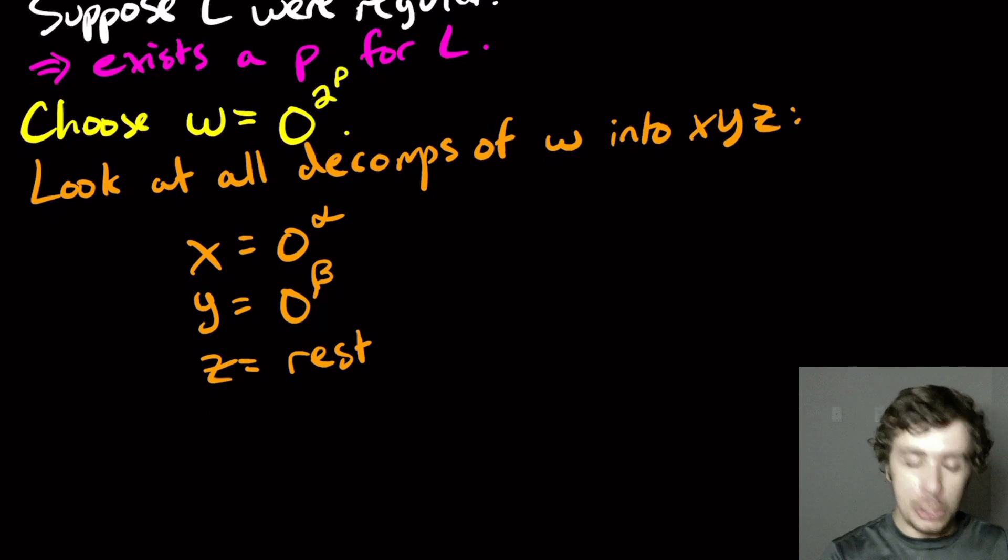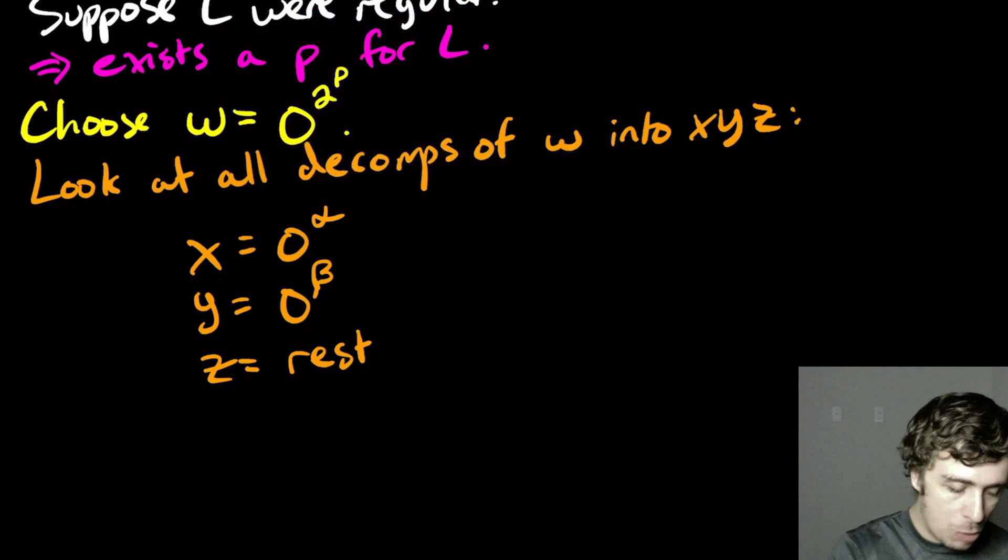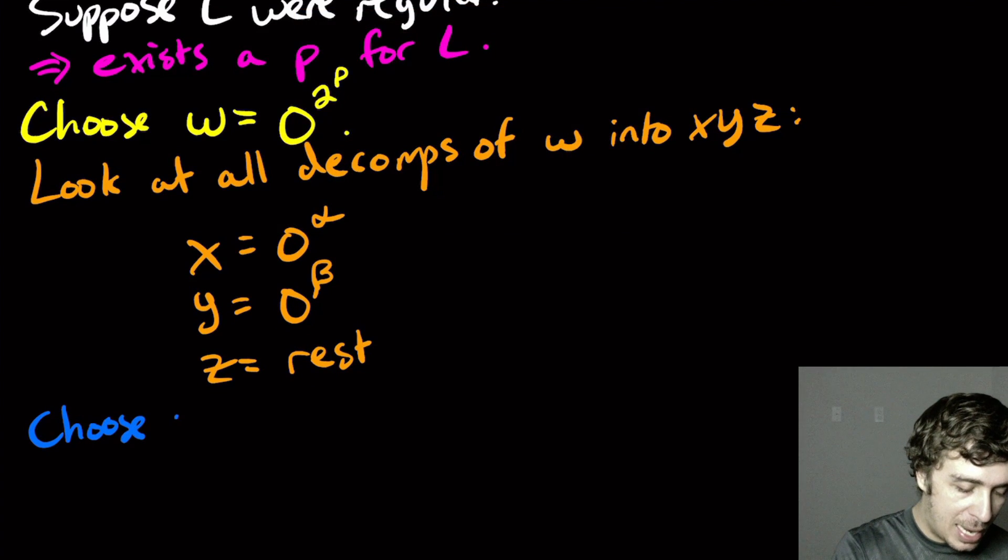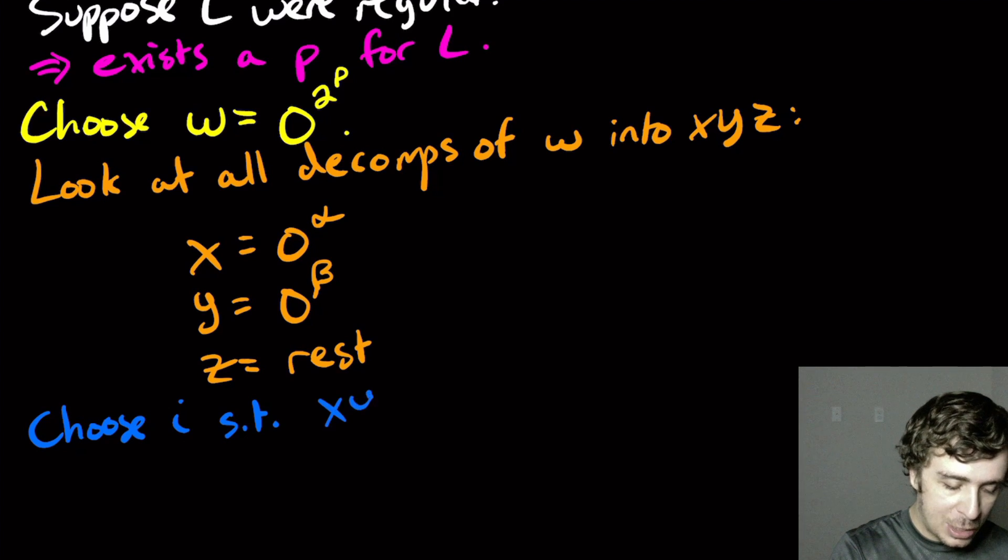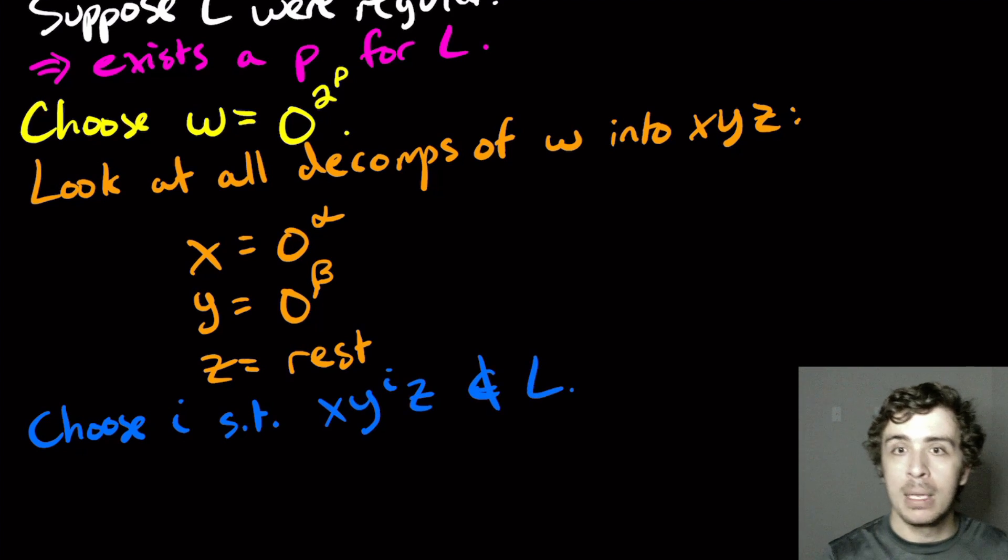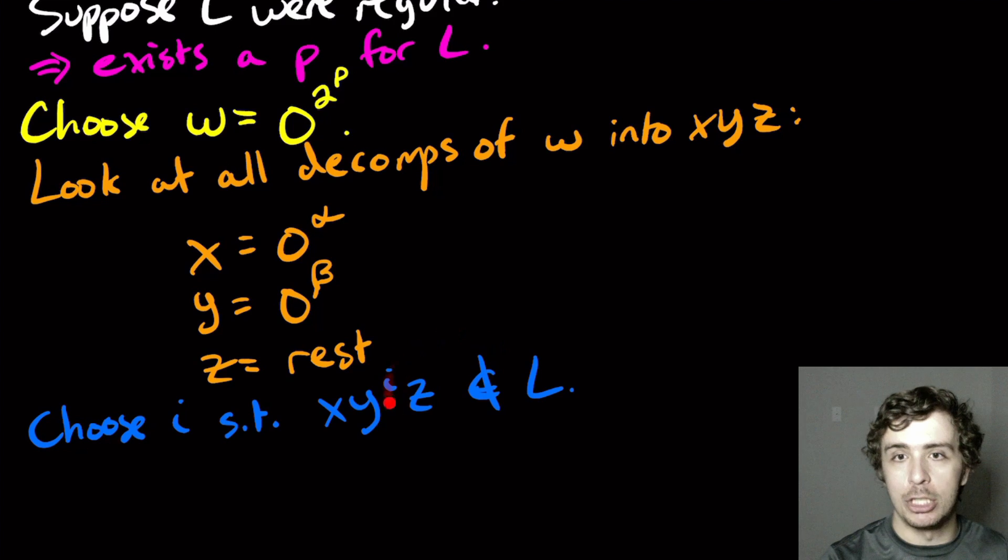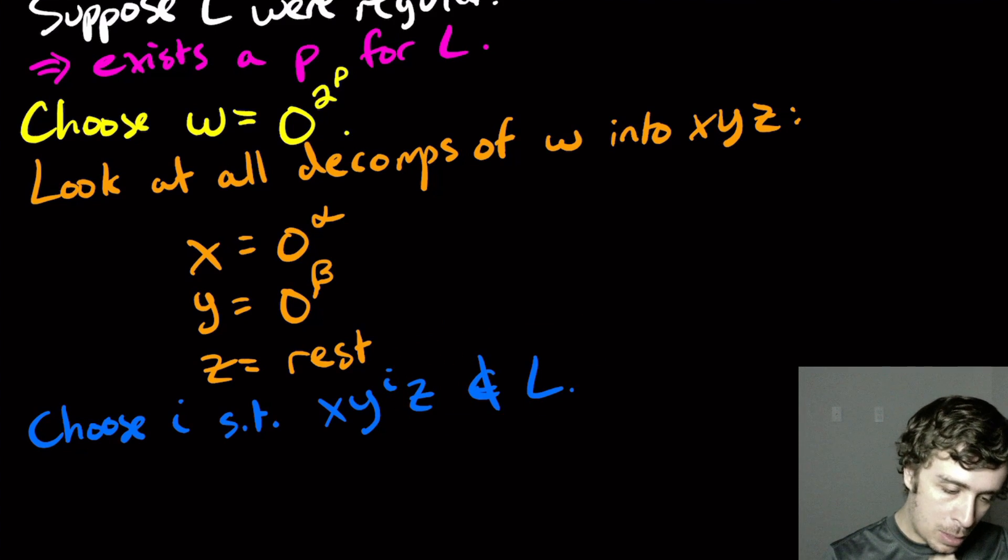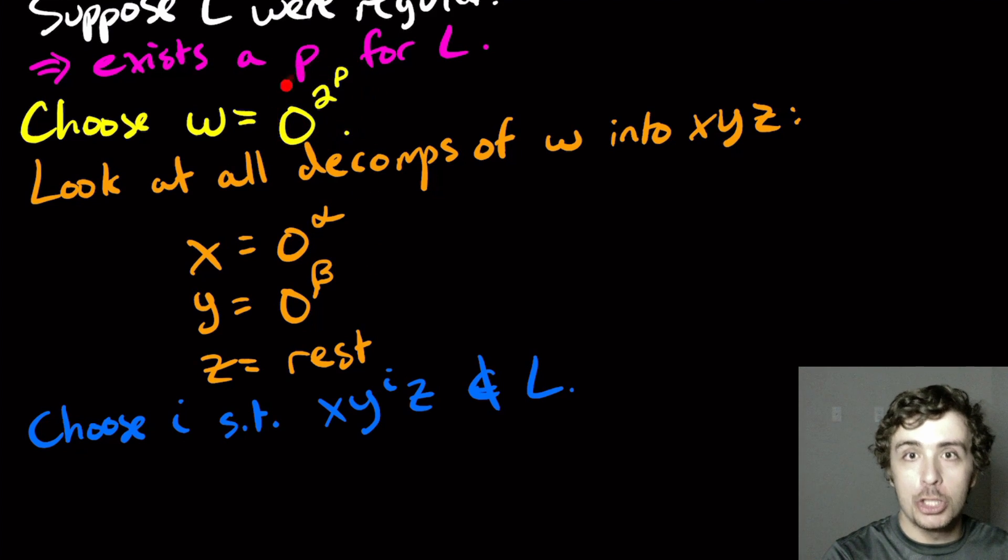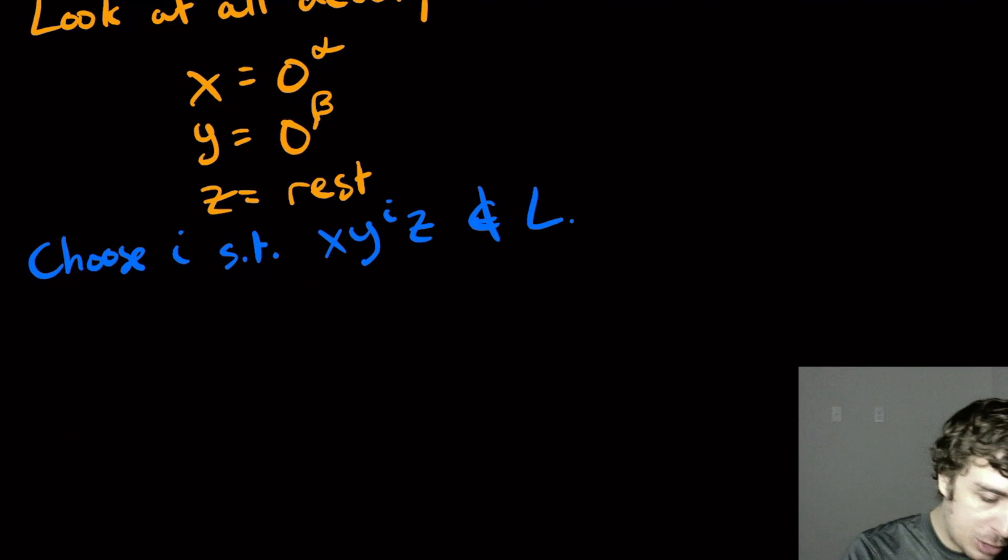So then now what we need to do is we need to choose a value I, some number I, such that X Y to the I Z is not in L, because it would contradict the for all statement that no matter what I you pick, you always stay in the language. But here we want to find one where you get out. So let's think. Here we're dealing with perfect squares. So let's actually look at this in general.